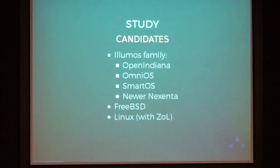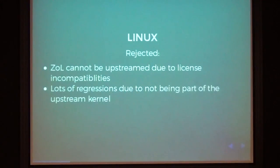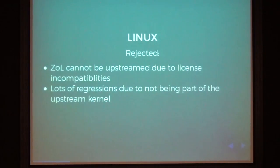We got candidates. If you're speaking of NFS, one of the first candidates is the illumos family — OpenIndiana, OmniOS, SmartOS, or even a newer version of Nexenta. Other candidates were FreeBSD and Linux with the ZFS on Linux module. We rejected Linux quite quickly because, due to license differences, ZFS support on Linux cannot be upstreamed into the kernel. That means each time you update your Linux kernel, you need to make sure there are no regressions against the interfaces used by the ZFS on Linux module — a huge pain. So we decided Linux was not the solution.